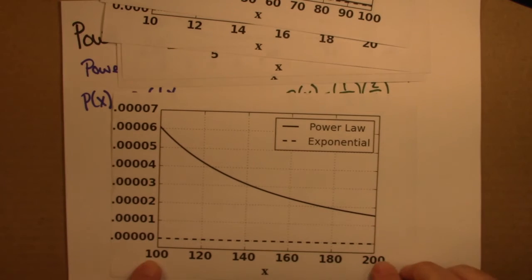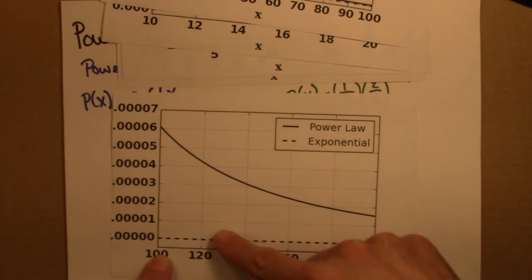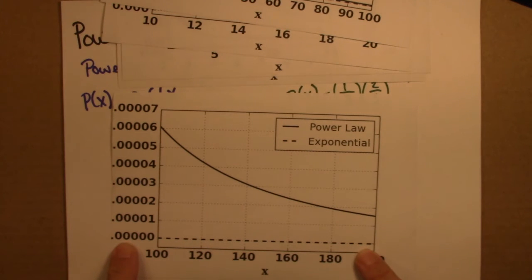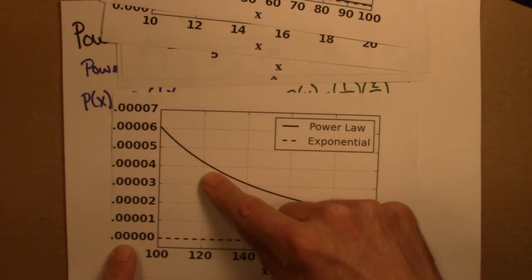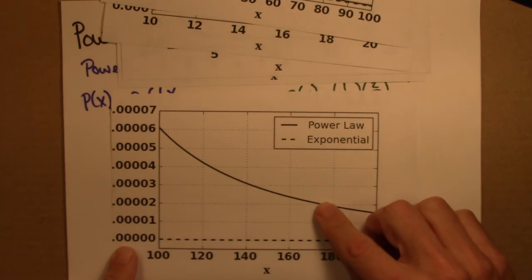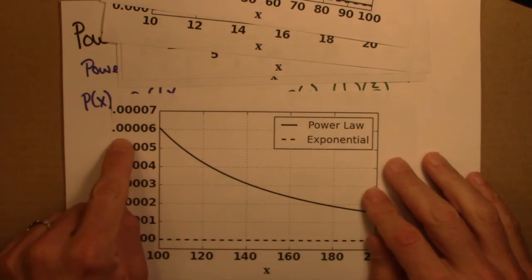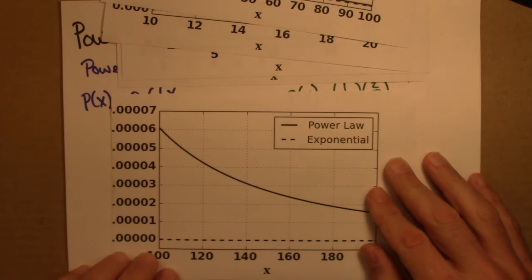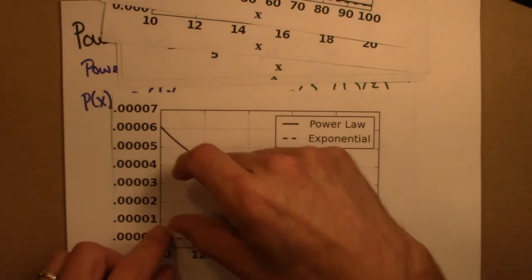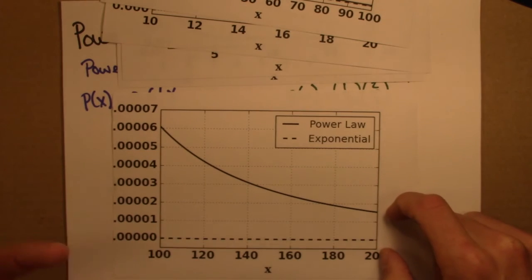So from 100 to 200, the exponential, that's this dashed line, it's indistinguishable from 0. But the power law is most definitely not indistinguishable from 0. It's small, these aren't very big numbers, but they're not 0. And they're not completely negligible either. So this is a visual way of seeing what we call the long tail for a power law.